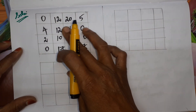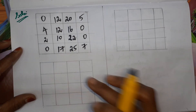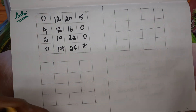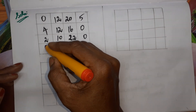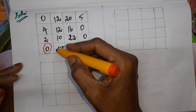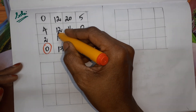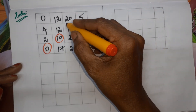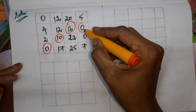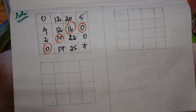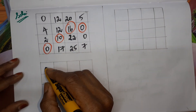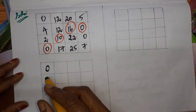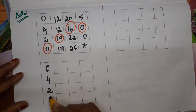After row subtraction, we have to do the same procedure column-wise. In every column, we locate the least element and subtract it from all the entries. In the first column the least is 0. In the second column, 10 is the least element. In the third column, 16 is the least element. In the fourth column, 0 is the least element. Since 0 is the least in the first column, no change — entries remain the same: 0, 4, 2, 0.